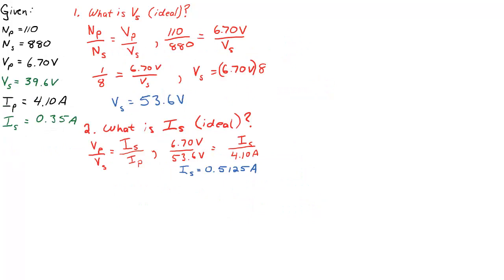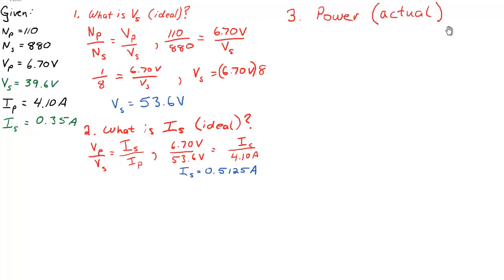So our last question looks at power. What is the power in compared to the power out? And then we're going to look at efficiency. Now for this question, we're going to look at the actual power. The instructor wanted to know what the overall efficiency of the transformer is. If it was an ideal transformer and we used these values that we calculated, of course the efficiency would be 100%. But it's not, in fact, an ideal transformer. We have to determine what the power in and the power out is.